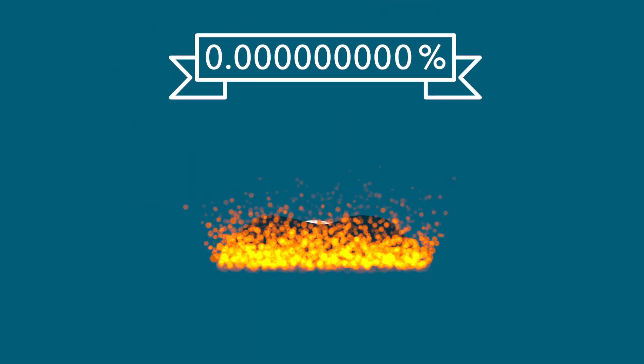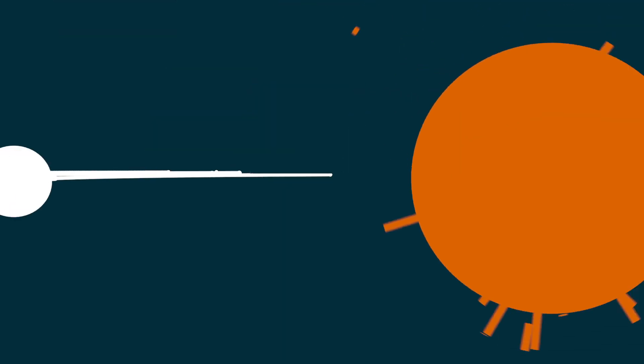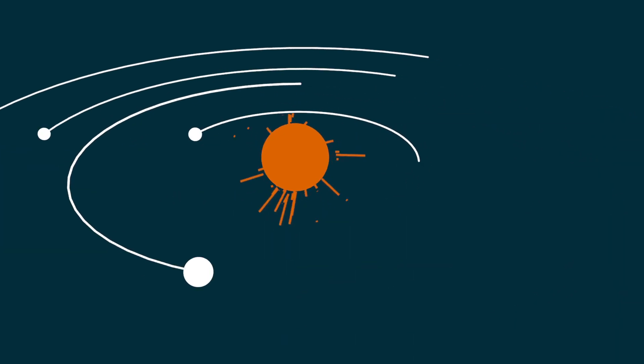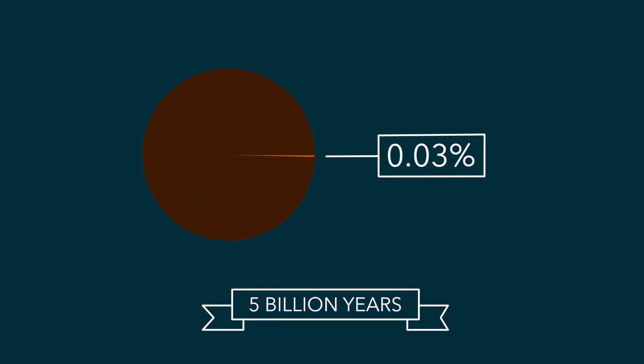Chemical processes only convert about a billionth of an object's mass, and even our sun, which runs on nuclear fusion, has only converted 0.03% of its mass in 5 billion years.